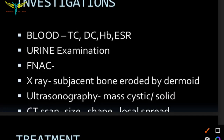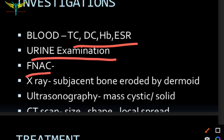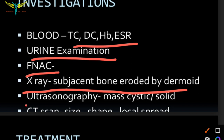Investigations in the case of dermoid cyst include blood investigations such as TC, hemoglobin, and ESR, as well as urine examination. FNAC — fine needle aspiration cytology — is performed on the dermoid cyst. X-ray shows sub-adjacent bone eroded by the dermoid. Ultrasonography is used to note whether the lesion is cystic or solid, and CT scan is for shape, size, and local spread.